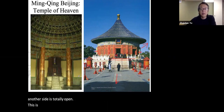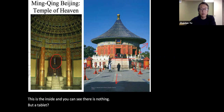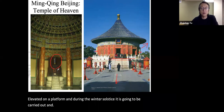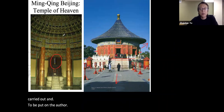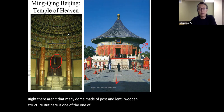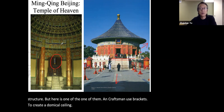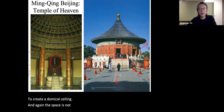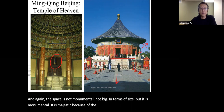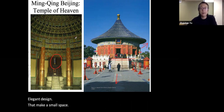Inside the tablet building there is nothing but a tablet elevated on a platform. During the winter solstice it is carried out to be placed on the altar. Under the roof is a post-and-lintel timber dome — craftsmen used brackets to create a domical ceiling. The space is not large in terms of size but is monumental and majestic because of the elegant design that makes a small space seem grand.